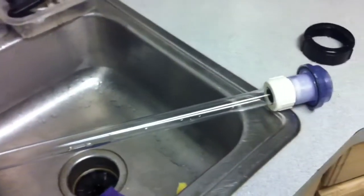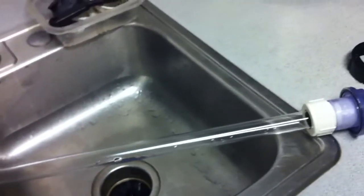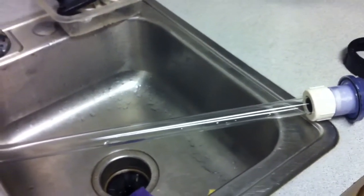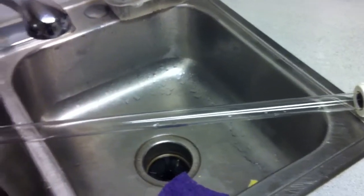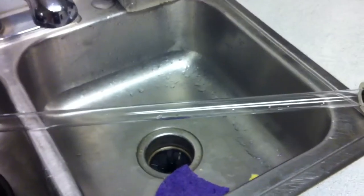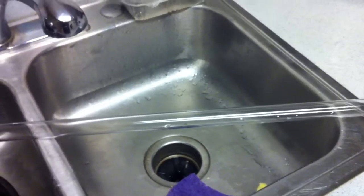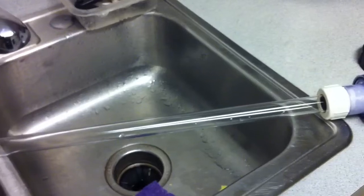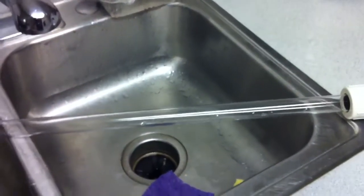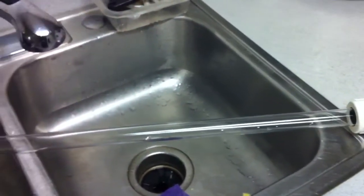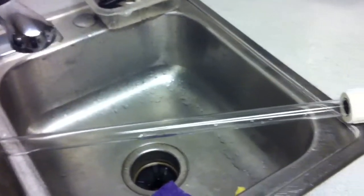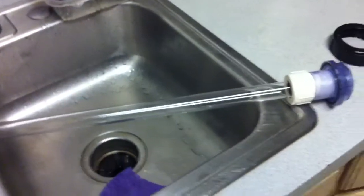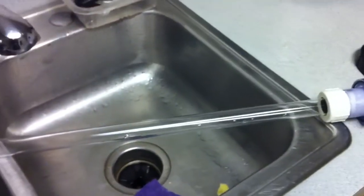Aqua UV takes their bulb and buys it from the same supplier that Emperor Aquatics gets theirs from, but they're on two different planes of bulb quality. What Aqua UV does is they buy the cheap bulb and literally glue their blue signature caps on the end and stamp their logo on the bulb and sell it. It's a high branded bulb, but it's just a cheap bulb.